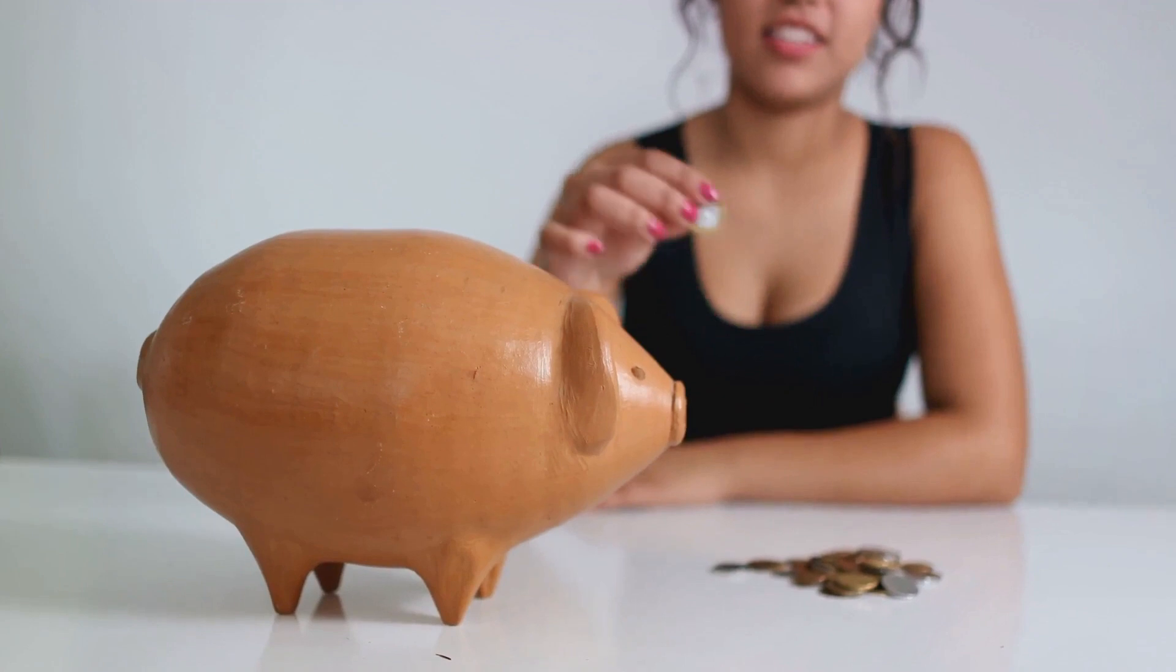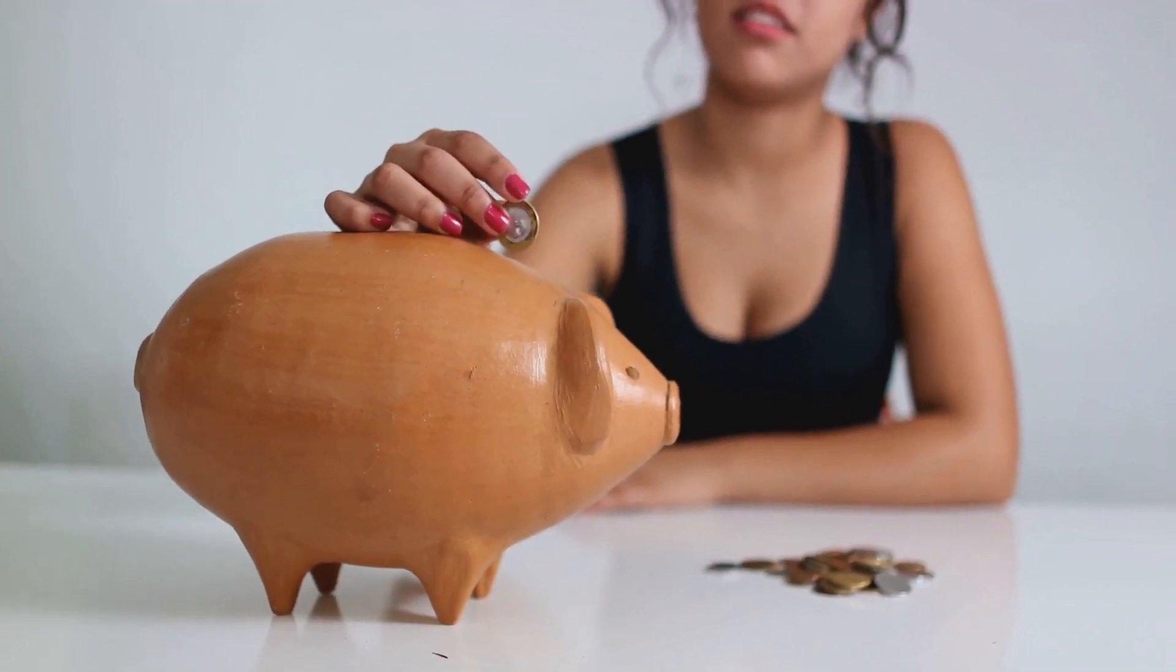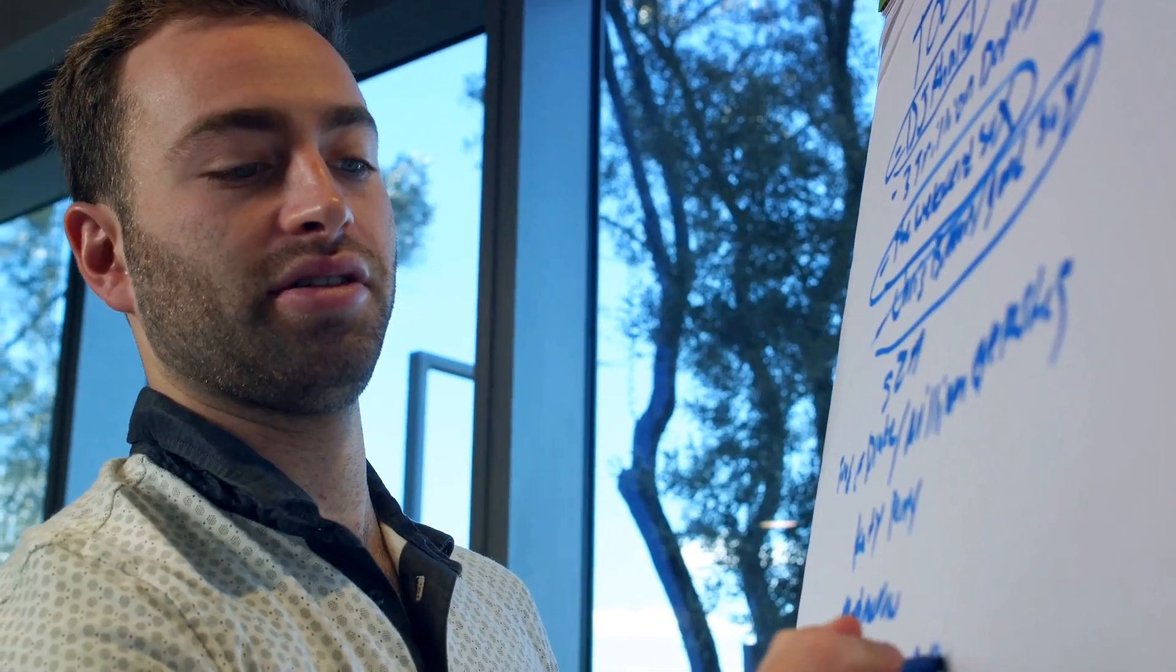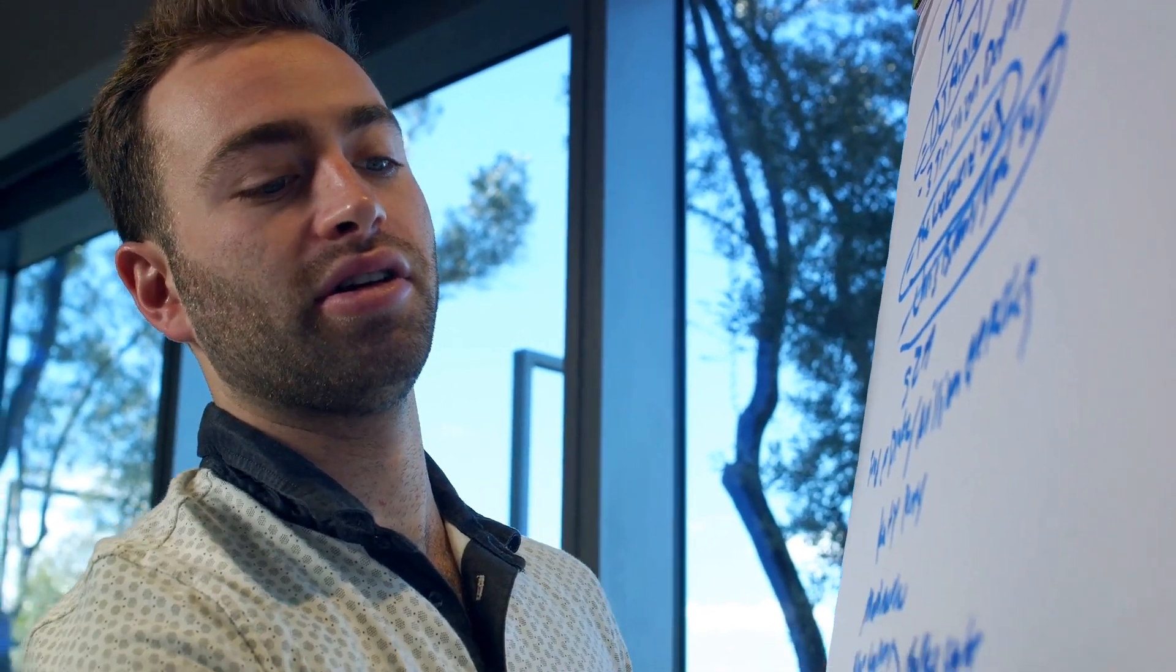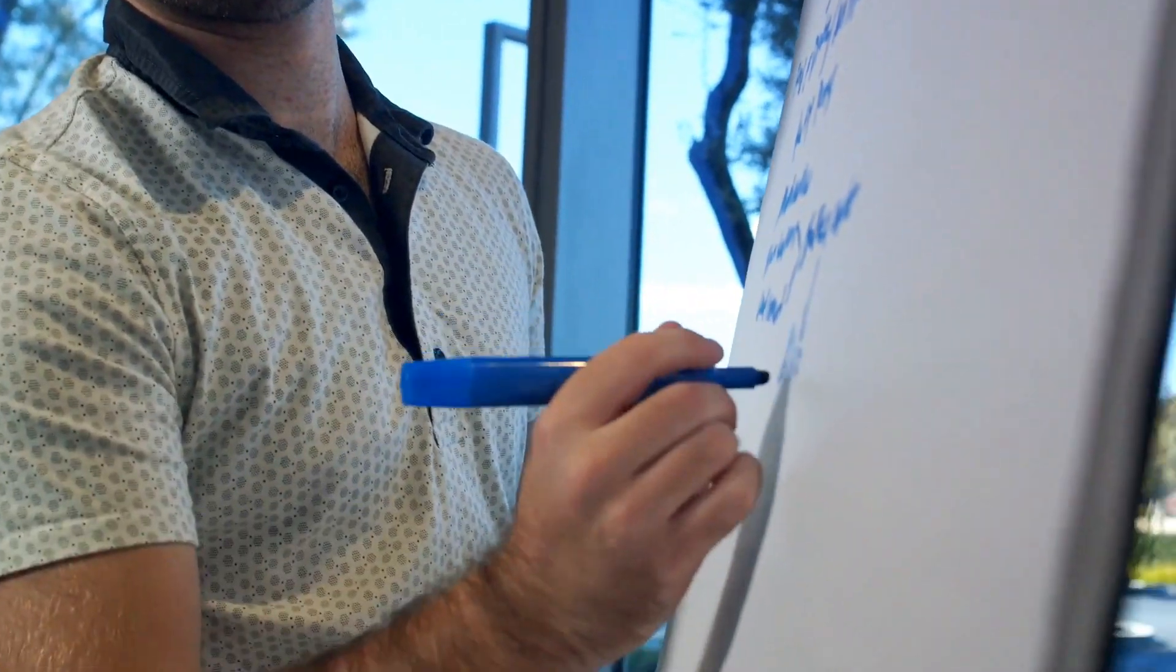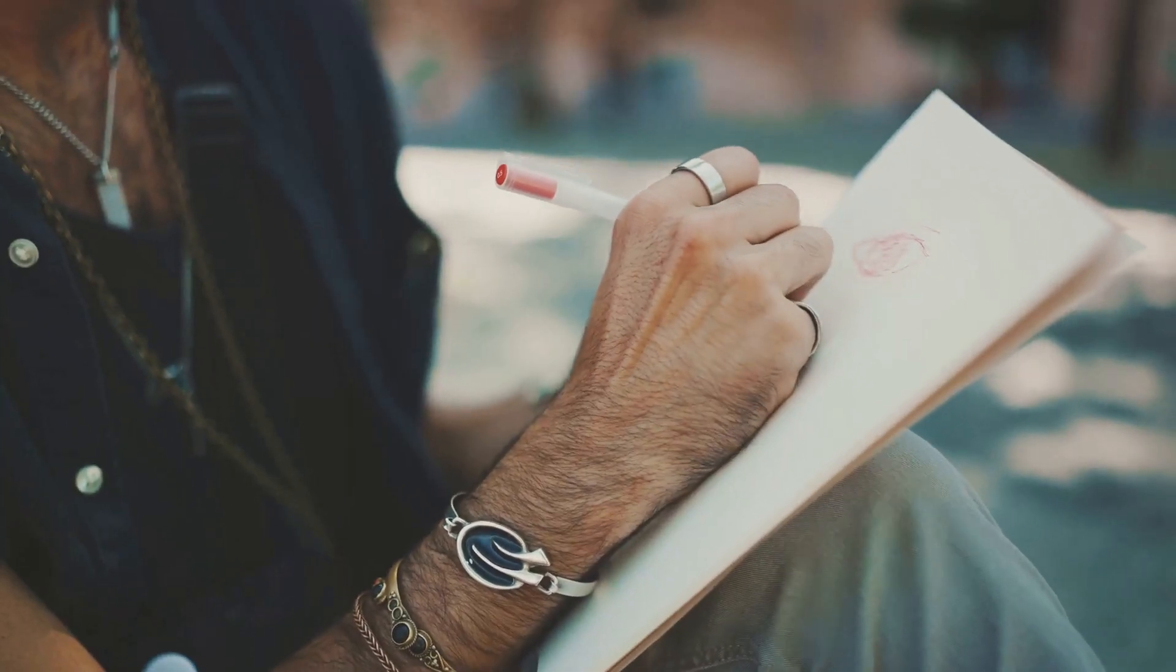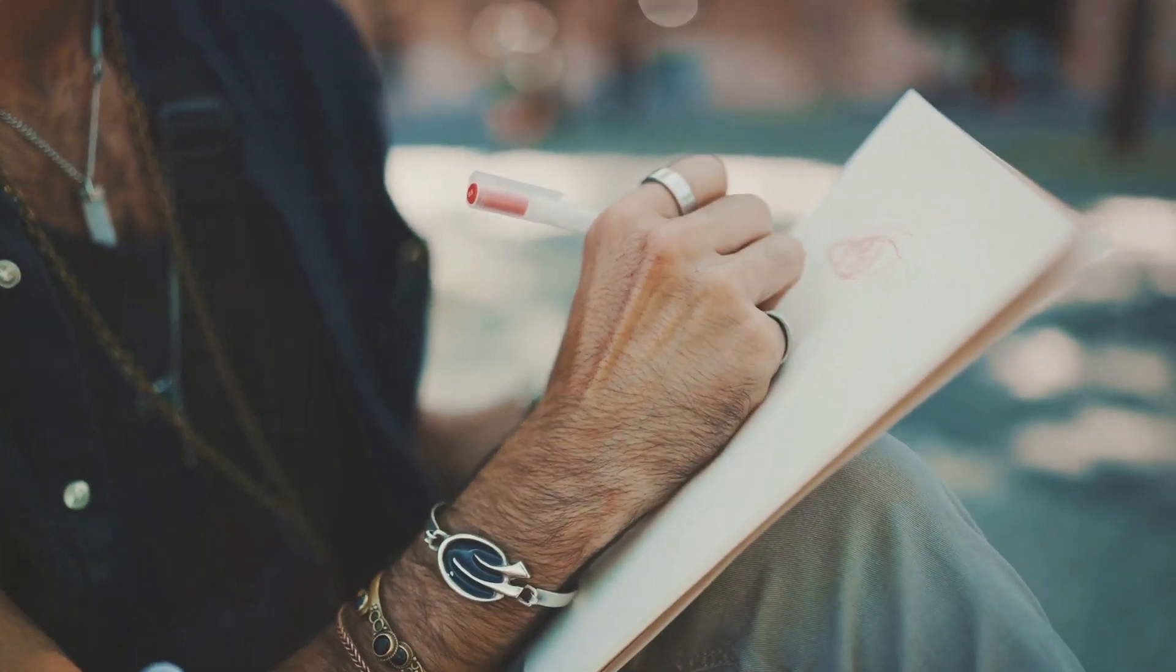For those of you saving for a rainy day, a picture of a full piggy bank could be a perfect representation. Remember, these images should not only represent your goals, but also resonate with you on a personal level. They should inspire and motivate you to keep pushing towards your financial objectives. With your images in hand, you're ready to create your vision board.